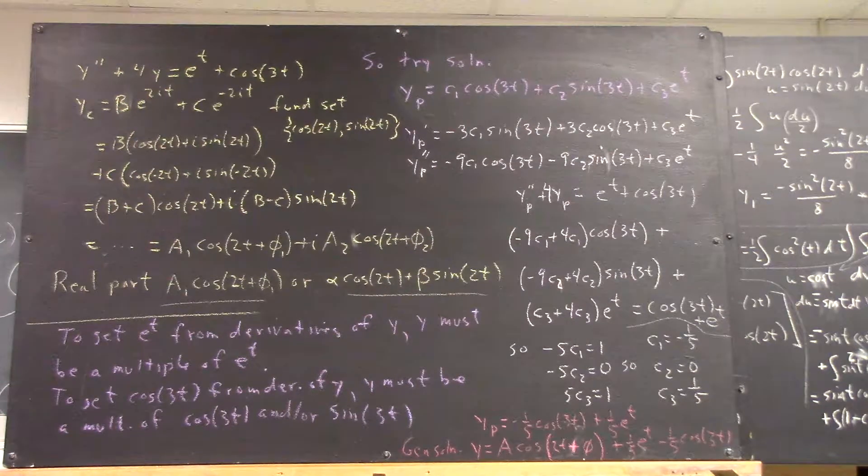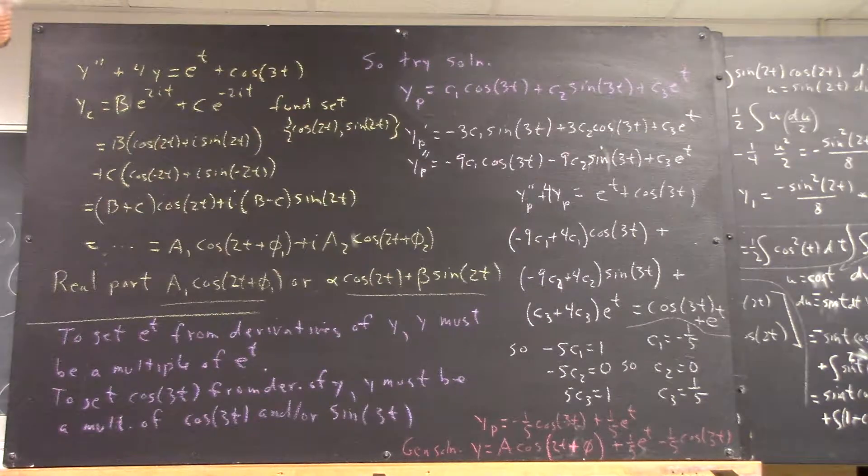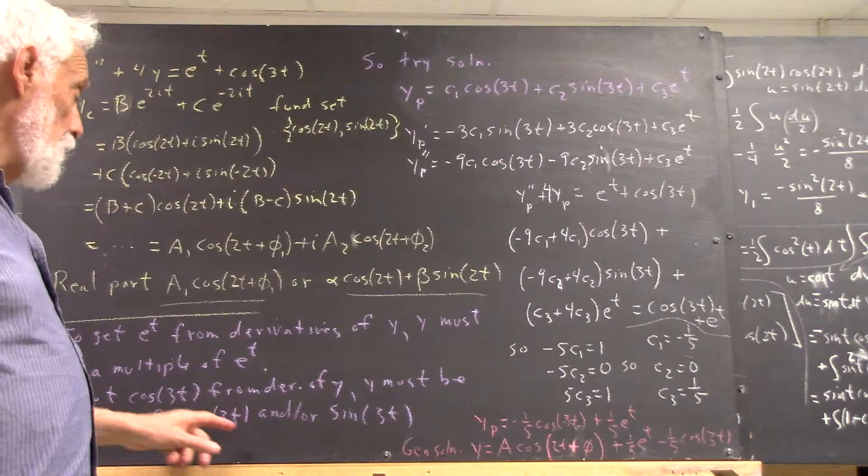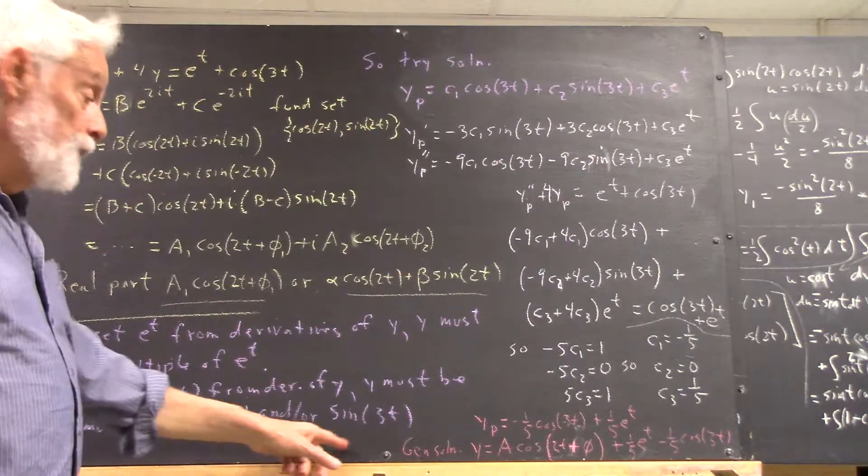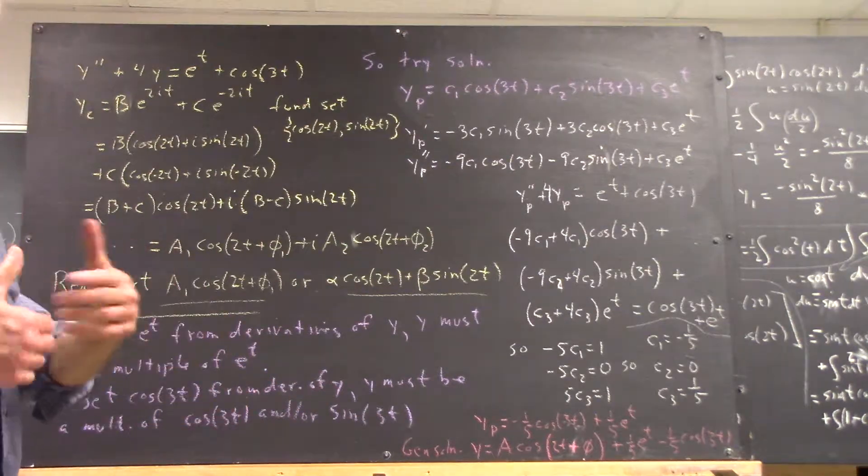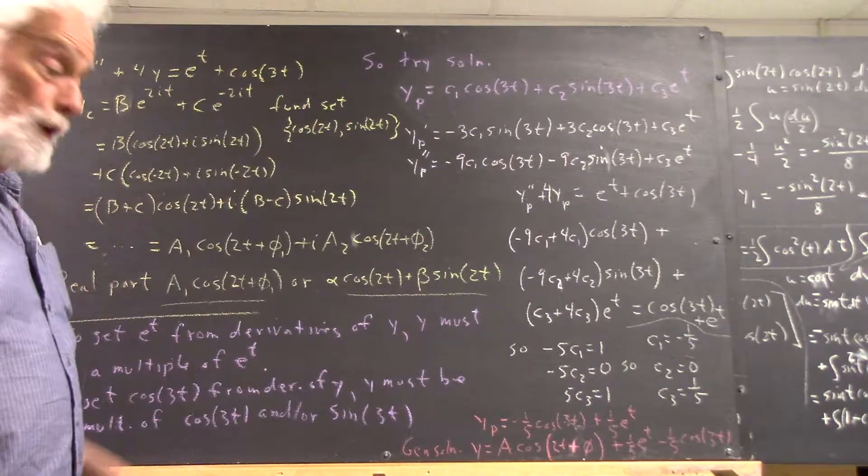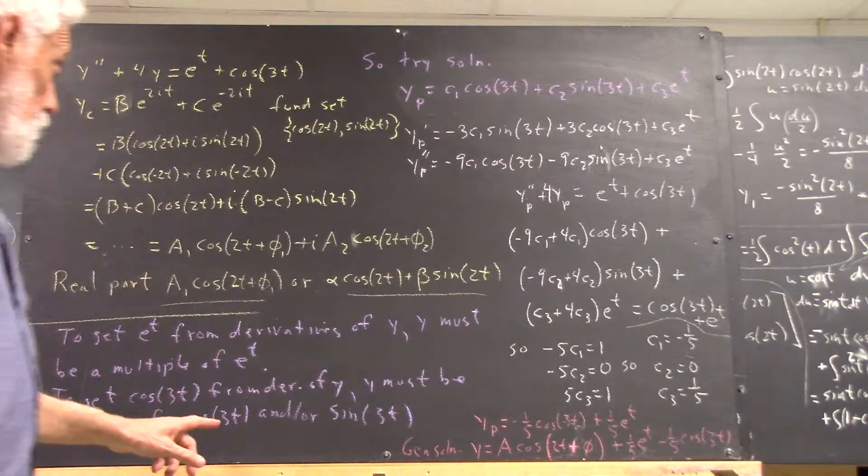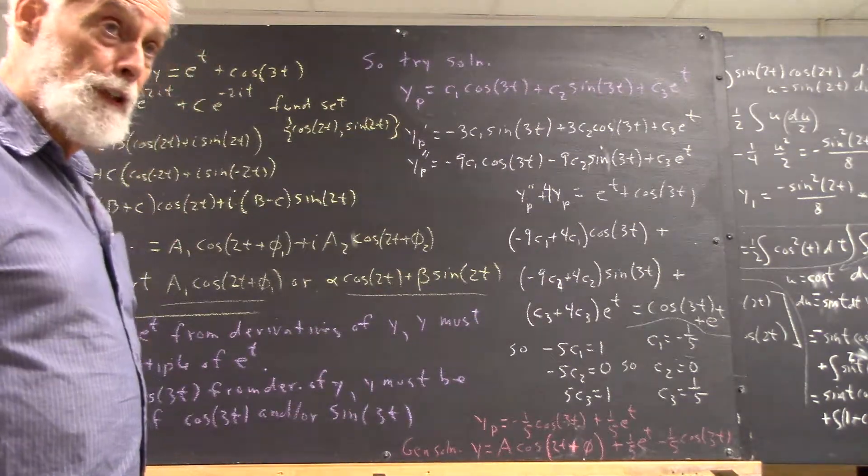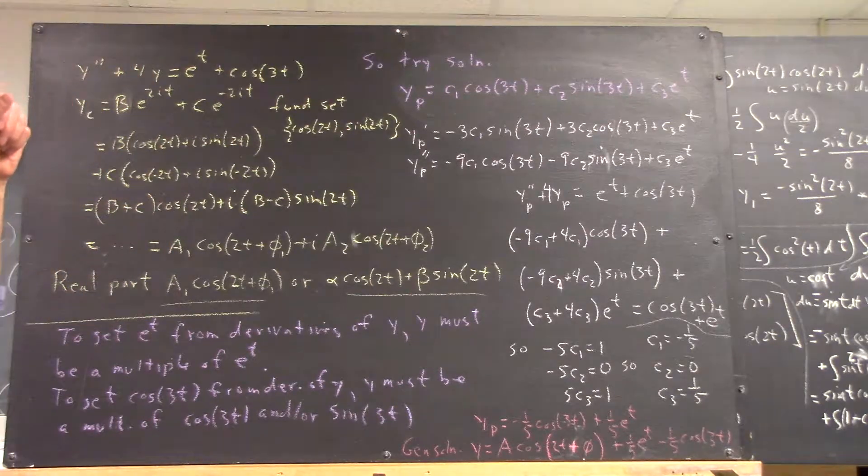To get the cosine of 3t from y and its derivatives, y has to be a multiple of cosine of 3t and or sine of 3t, because every other derivative of sine of 3t is a multiple of cosine of 3t. So we have to use both the cosine of 3t and the sine of 3t in our trial solution.